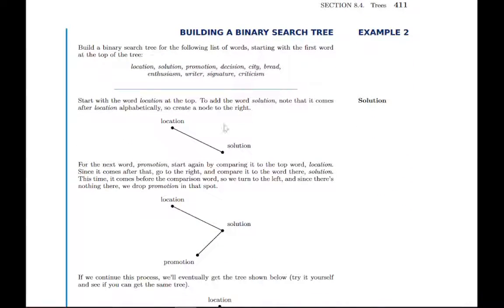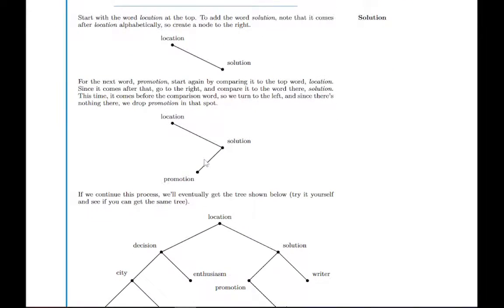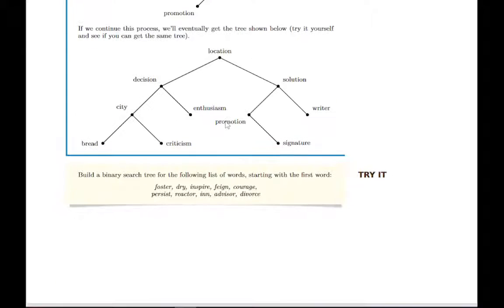Here's an example of building a binary search tree. You start with the first word, and then that becomes your top node, sometimes called the root. From that, you start adding pieces to the right or to the left, depending on whether they come before or after it alphabetically. The second word comes after it, so you would put it down and to the right. Then the following word comes after it as well. You go down to the right and then compare it to this word. It comes before it, so you go down to the left and there's an empty spot to place it. You can repeat that until you get this full tree, this binary search tree.